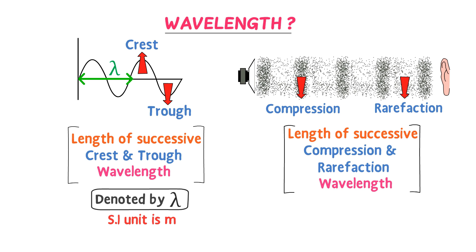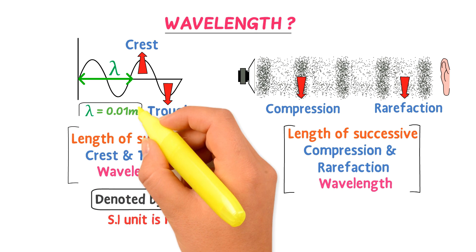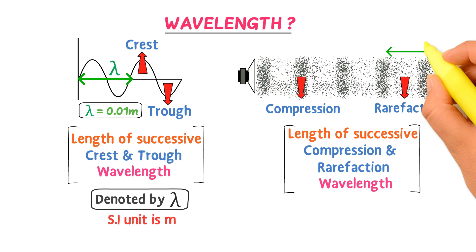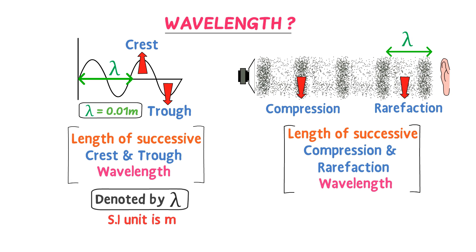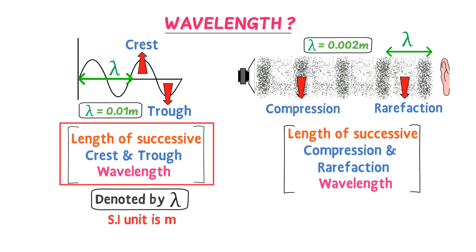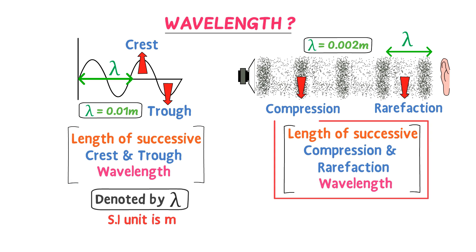Let's suppose that the wavelength lambda of the transverse wave is equal to 0.01 meter. The region of compression and rarefaction in a longitudinal wave also defines wavelength. Let's suppose that its wavelength lambda is equal to 0.002 meter. Remember that wavelength is the length of successive crest and trough, or it is the length of successive compression and rarefaction.